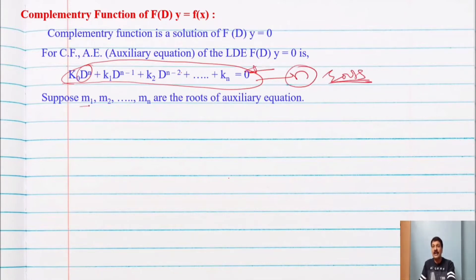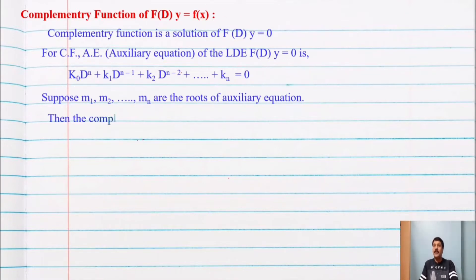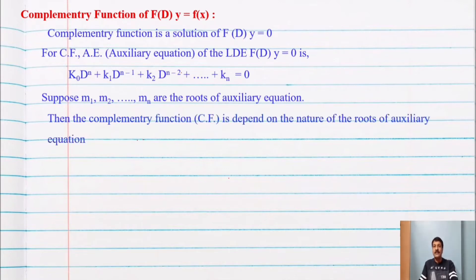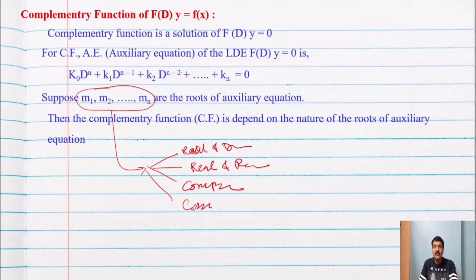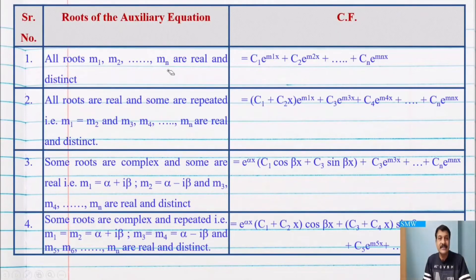The complementary function depends on the nature of the roots of the auxiliary equation. If we consider the n roots, there are four different cases. Case 1: all roots are real and distinct. Case 2: roots are real and some are repeated. Case 3: some roots are complex. Case 4: some roots are complex as well as repeated.